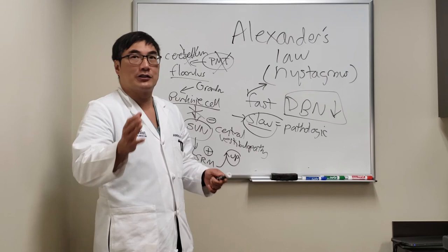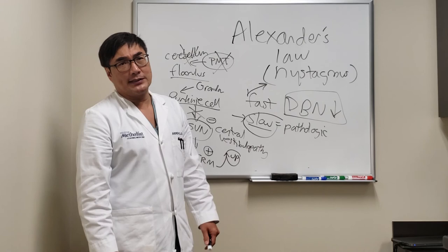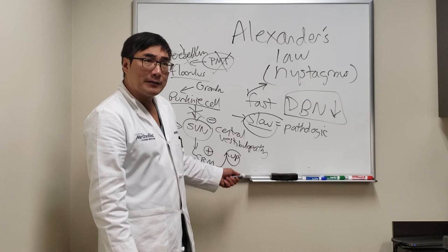It's kind of the same thing with nystagmus. You'll be worse in the direction where the weakness is, and because the problem here is slow pathologic drift up, it'll be worse in down gaze and that is Alexander's law.